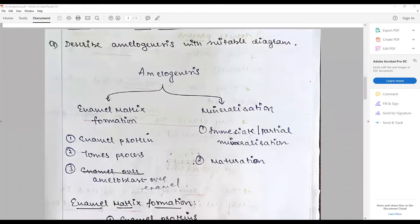Amelogenesis will have two important components: namely the enamel matrix formation and mineralization. In enamel matrix formation, you have to talk about the formation of enamel proteins, Tomes processes, and overall enamel ameloblast. In mineralization, you need to talk about immediate and partial mineralization and maturation of this mineralization.